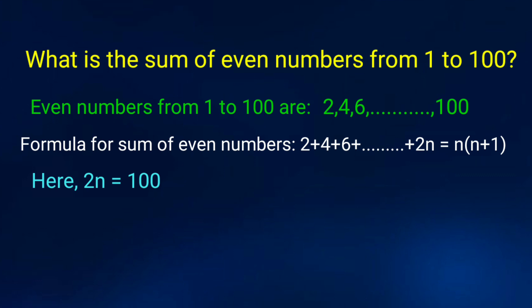Here 2n is equal to 100. So n is equal to 100 by 2, that is equal to 50.